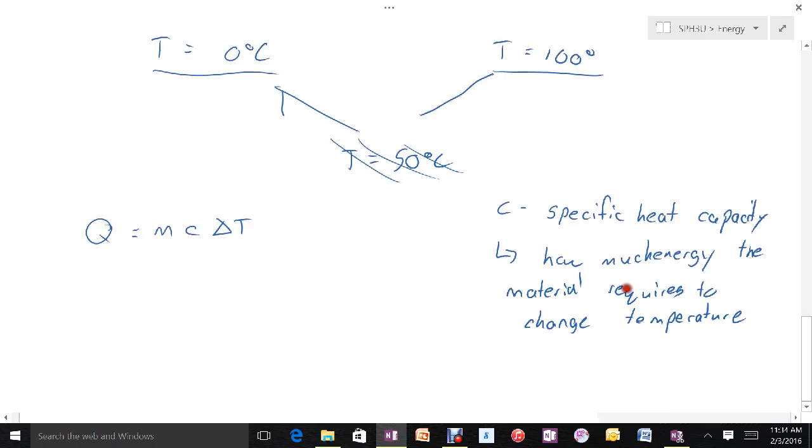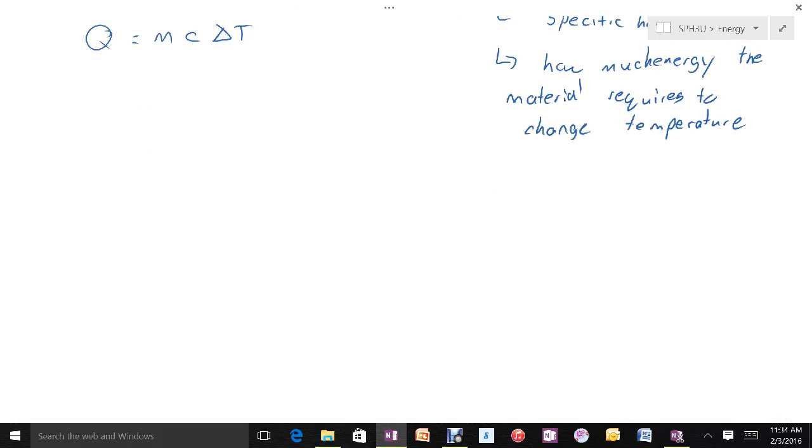So what we do here if we want to predict an equilibrium temperature is we recognize that as one substance gains heat from the other substance, that's going to be the same amount of heat that the other substance loses. So if we take into account the mass, the specific heat capacity, and the temperature change of one substance, and the mass, the specific heat, and the negative temperature change of the other substance, when we take all three factors into account, these two things must be equal.